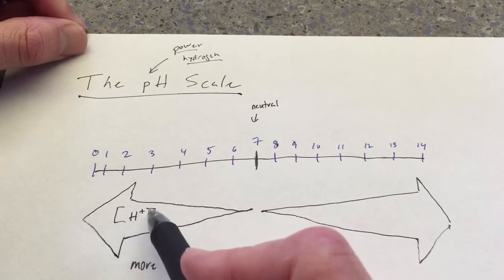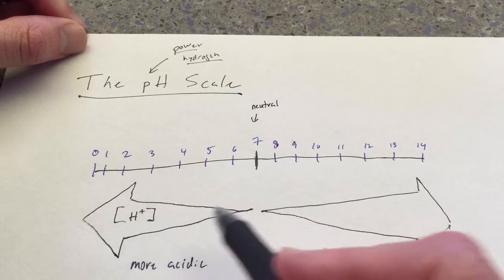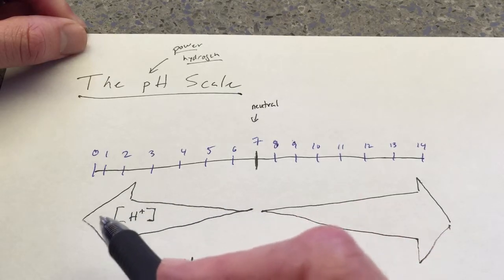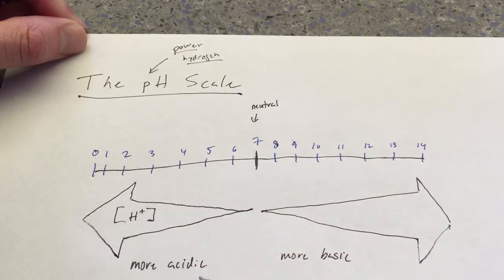a hydrogen which has lost its electron and taken on a positive charge. And whenever you see me draw brackets around something, that means concentration of. So from 7 out towards 0, we get an increasing concentration in the amount of hydrogen ions.